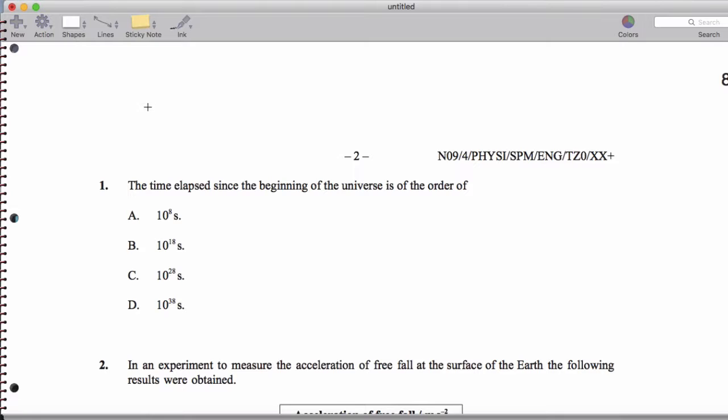So an hour - a minute is on the order of 10 squared seconds, about 60 seconds, right? An hour is on the order of 1,000 because that's 60 times 60, 3,600 seconds. That's an hour.